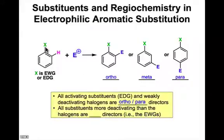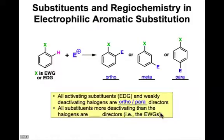If X is an electron donating substituent or a halogen, the resulting substitution takes place in the ortho position next to the substituent or in the para position opposite the substituent. In contrast, electron withdrawing substituents — anything that's more deactivating than a halogen — is a meta-director.